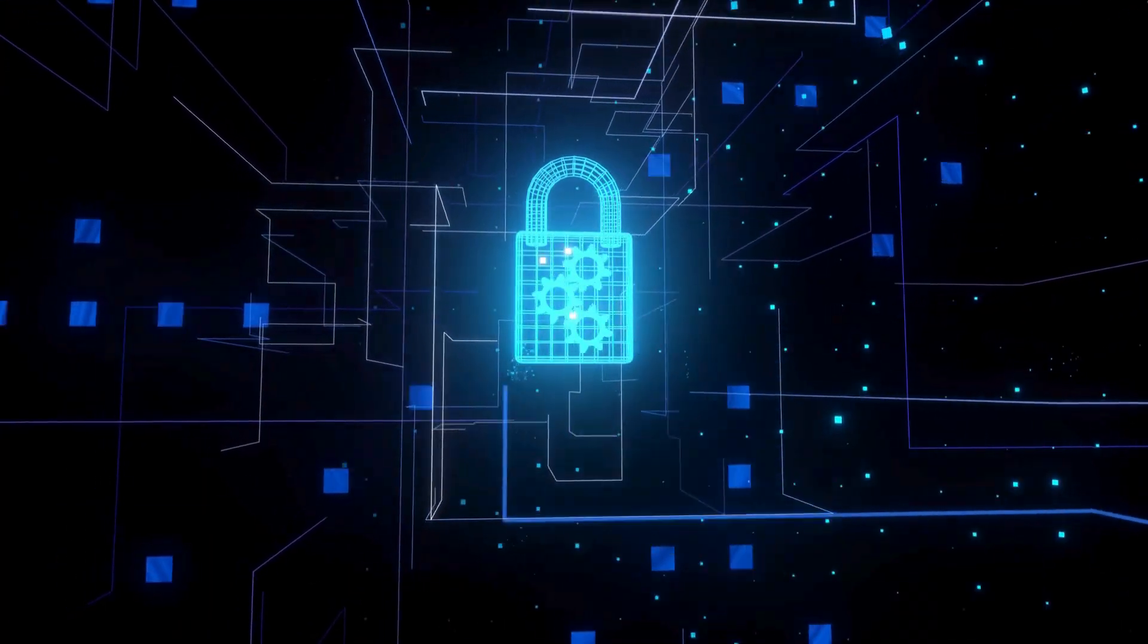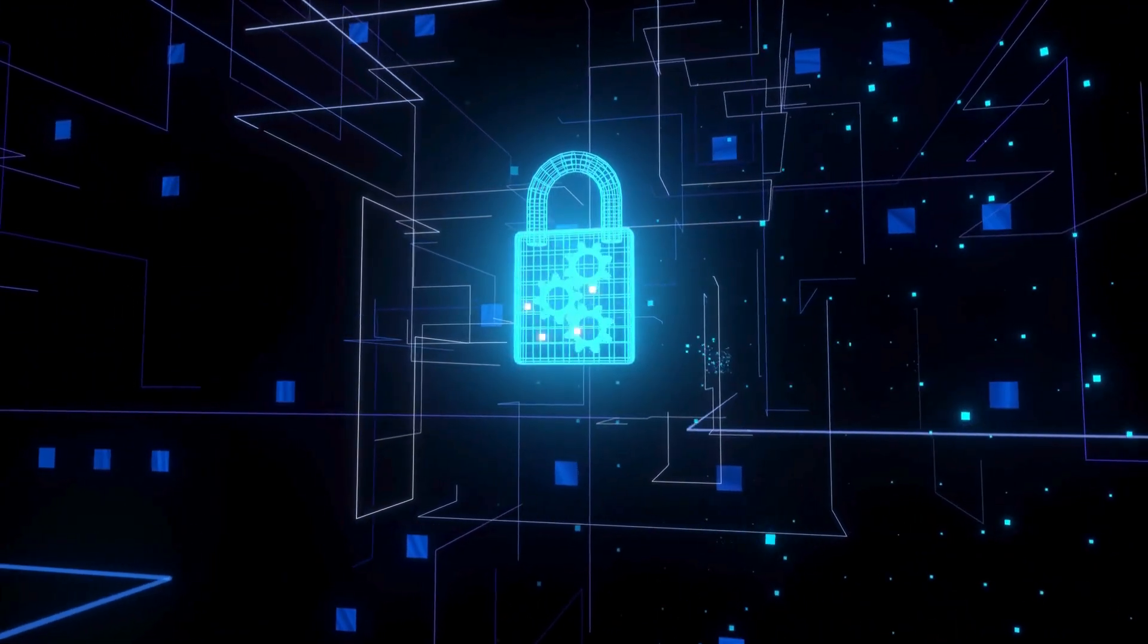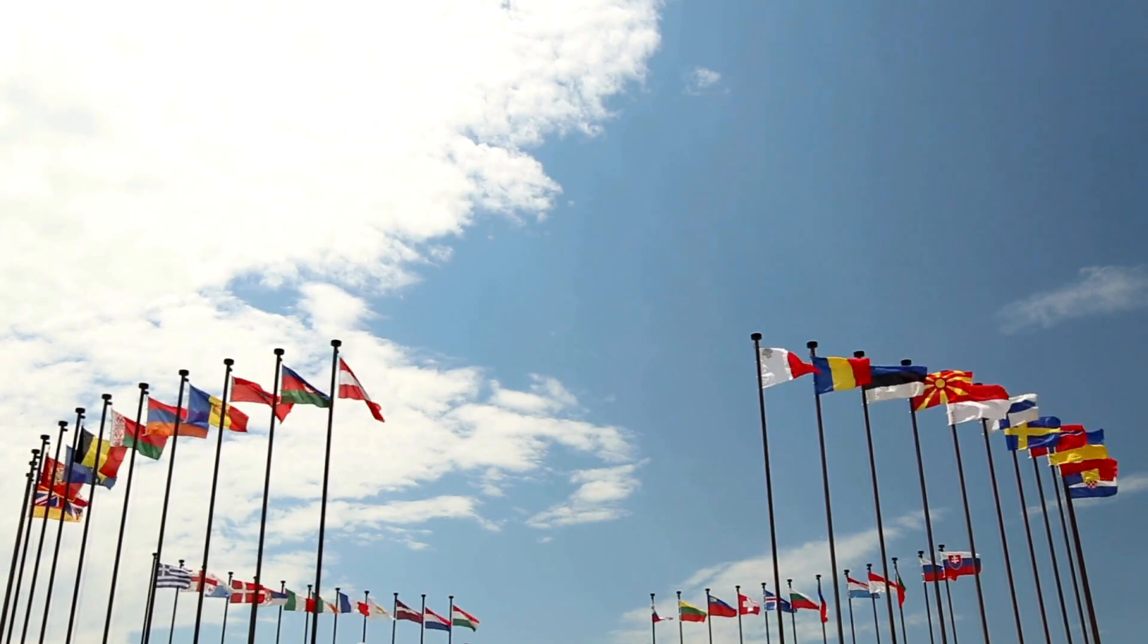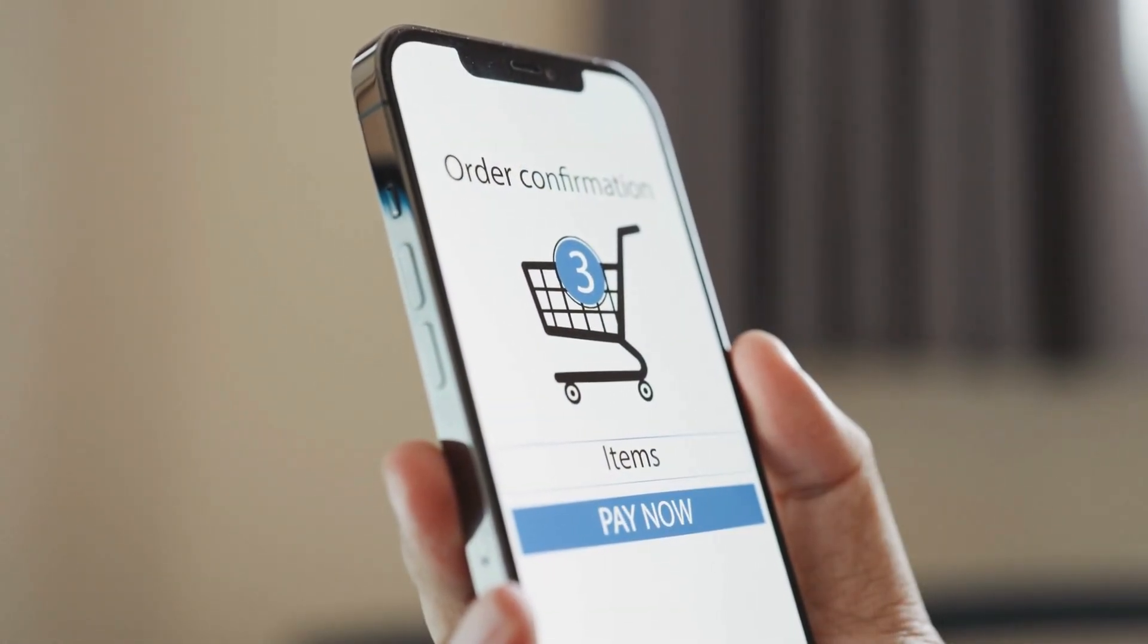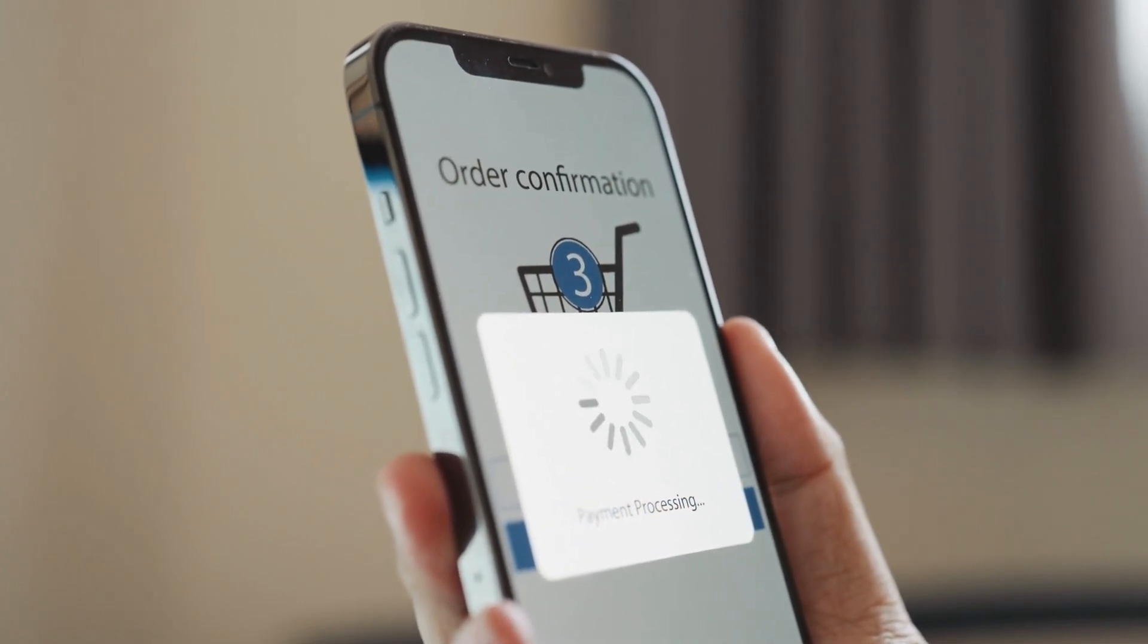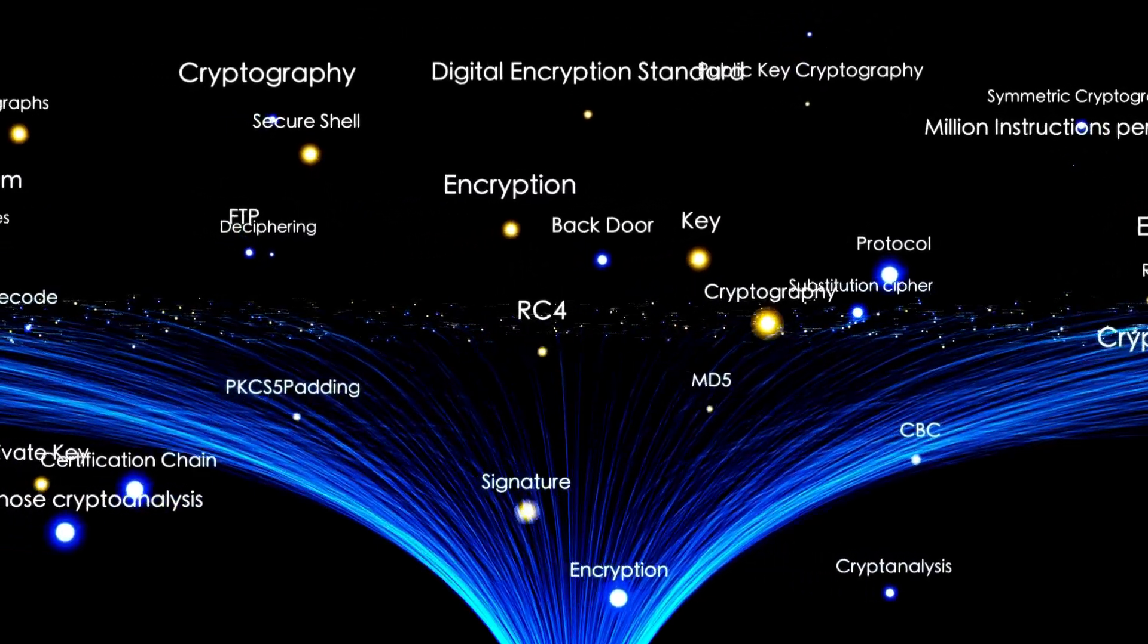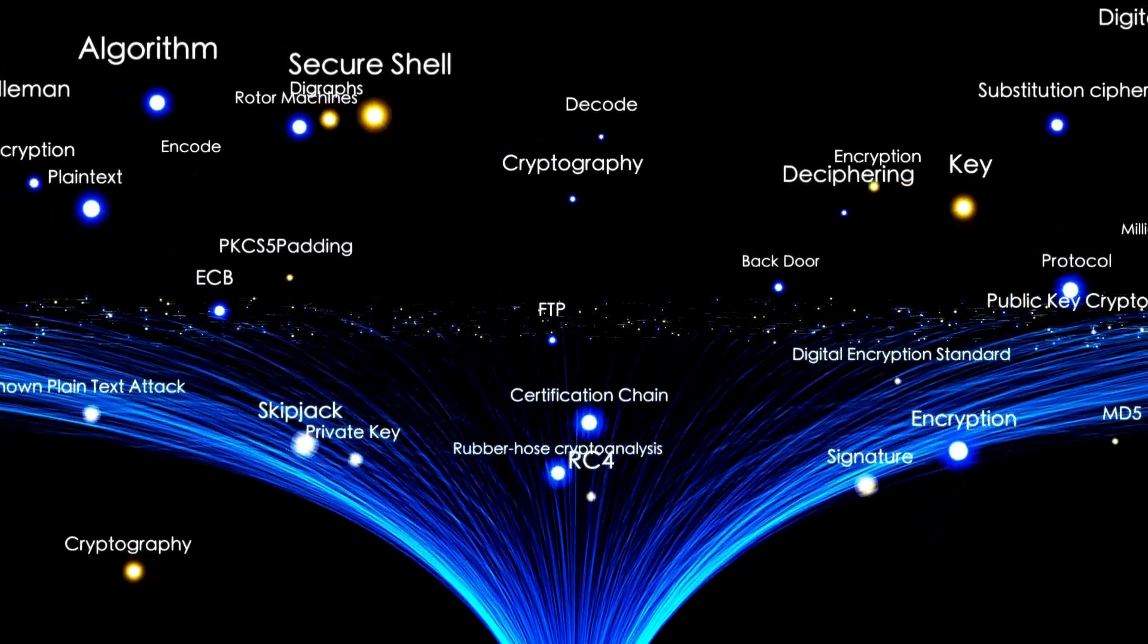He also delves into post-quantum cryptography, aiming to develop secure encryption methods against both quantum and classical computers. He also discusses the global security implications, including the potential shift in power balance as nations and organizations race to develop quantum-resistant cryptography. Additionally, Kaku touches on quantum-safe encryption's economic and societal impacts, crucial for protecting digital commerce, communication, and infrastructure. While recognizing the potential of quantum cryptography, Kaku acknowledges the challenges and limitations, including technical difficulties and the ongoing arms race between cryptographic development and quantum computing capabilities.